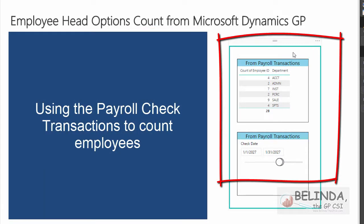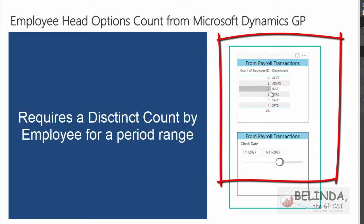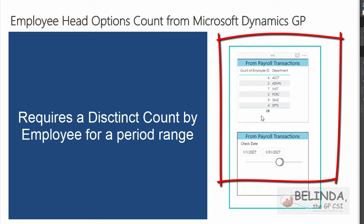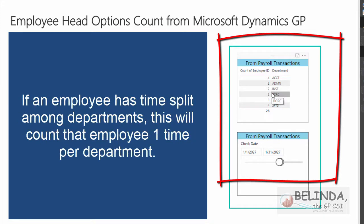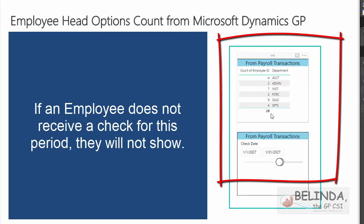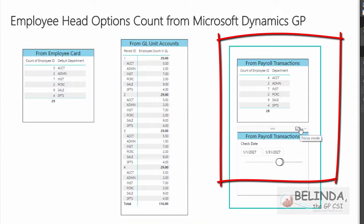The third option, suggested by another user, is pulling from payroll transactions directly. You'll want to do a distinct count by employee so you're not just counting the number of transactions — in this case, I'm counting unique checks for the whole month of January. This way I see anyone who was paid during the month, even if they're now inactive. However, if someone's time is split between departments, they'll appear as a full employee in each department, so 29 employees might show as 40. Also, if an active employee didn't receive a paycheck, they won't appear here — so would you want to count them?